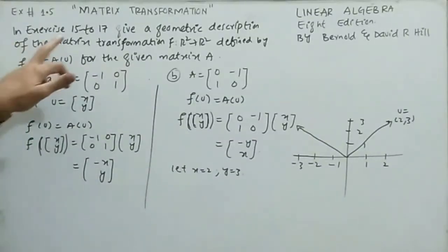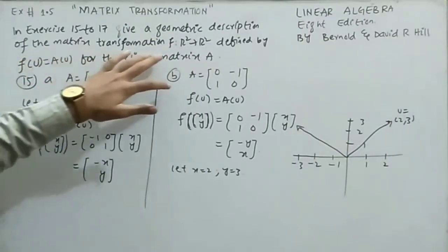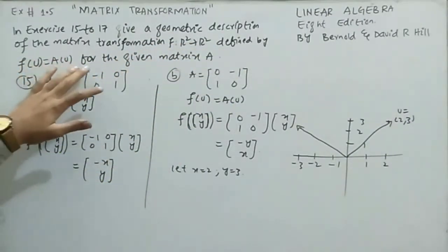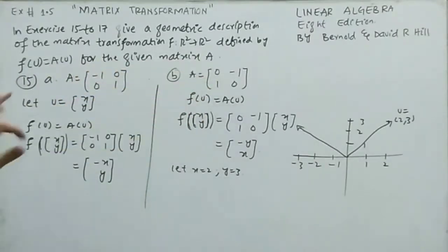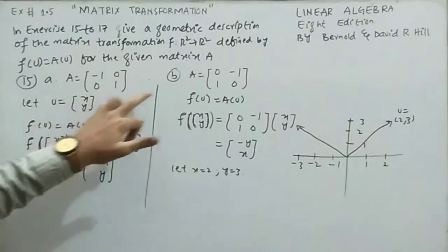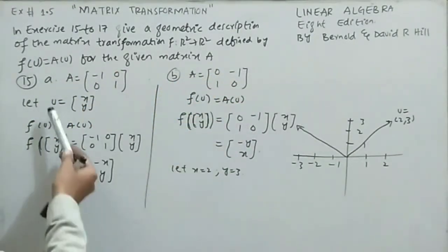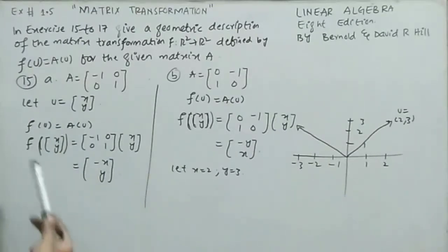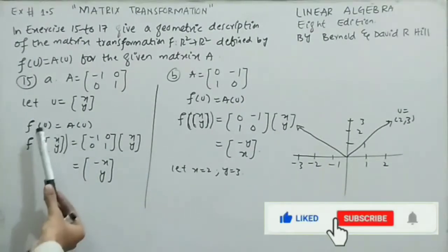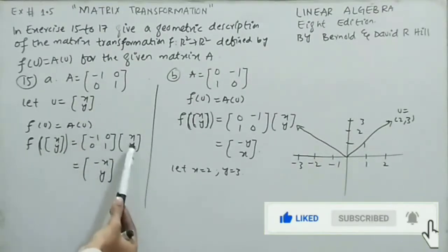Now move to exercise 15 to 17. Give a geometric description of the matrix transformation: a function from R² to R² defined by f(u) = Au for the given matrix A. Question 15, part A: A = [[-1,0],[0,1]]. Let u = (x,y). Using f(u) = A·u, it becomes A = [[-1,0],[0,1]] times (x,y).